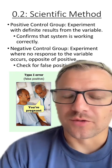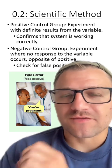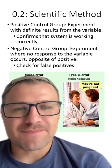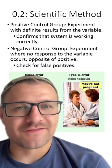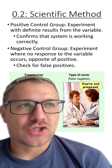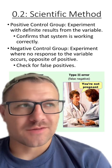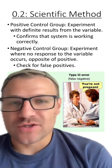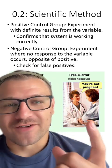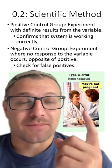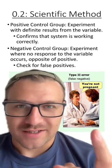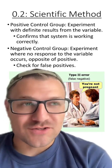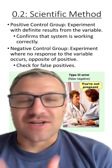In a positive control group, we experiment with defined results from the variable. This helps us confirm that the system is working correctly. A positive control group helps us identify something called false negatives, where something should be occurring, but if our system or data shows that it's not occurring, that means something's going wrong. For instance, in a false negative test, you can see this person is pregnant, but the test is saying no, you're not pregnant. This tells us something is going wrong with our procedure.